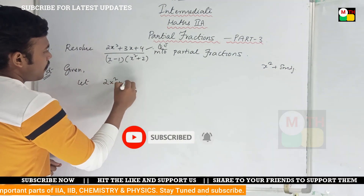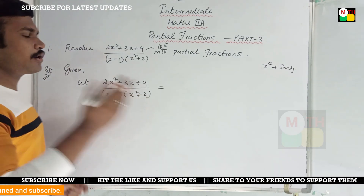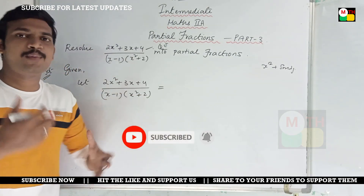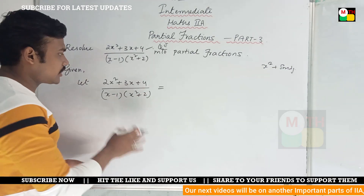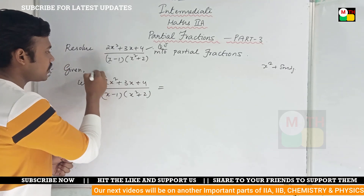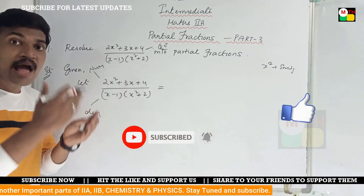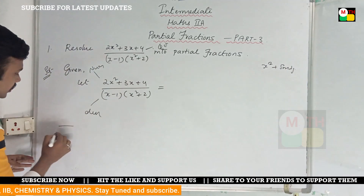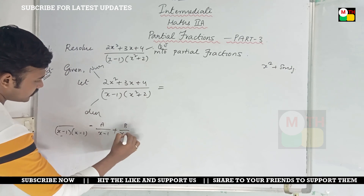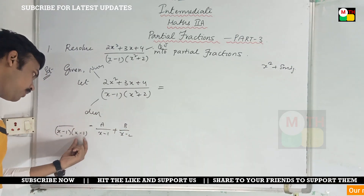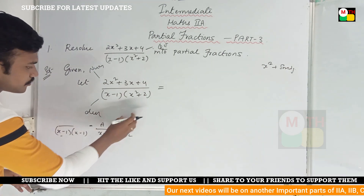Let 2x squared plus 3x plus 4 divided by x minus 1 into x squared plus 2 be equal to something. For example, if the denominator is x minus 1 and x minus 2, then we write a by x minus 1 plus b by x minus 2.